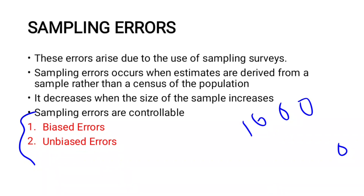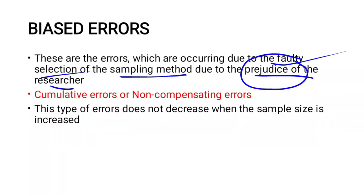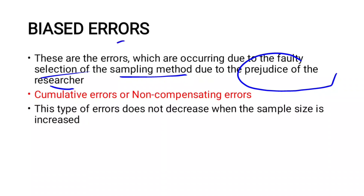In the case of biased errors, these are errors that occur due to the faulty selection of the sampling method or due to the prejudice of the researcher. The researcher already has something set in mind when selecting the sampling method. Because of that predetermined mindset, the sampling method chosen introduces bias — these are called biased errors. They are also called cumulative or non-compensating errors.